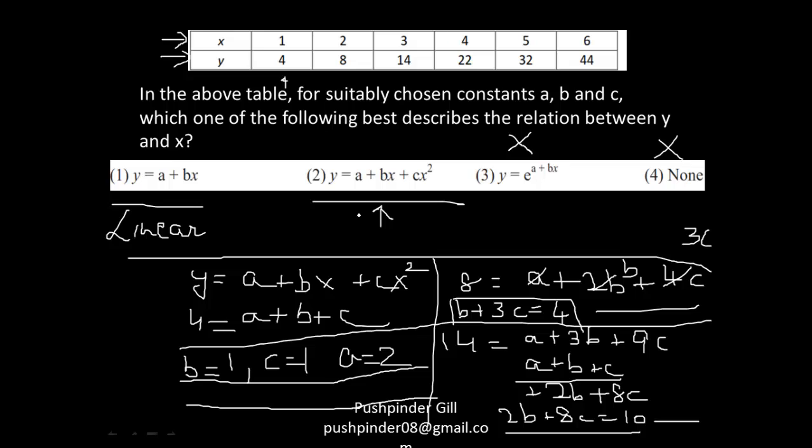Now y = a + bx + cx². Let's substitute that in here, right? So y = 44 should be equal to a, a is nothing but 2, plus bx, 1 times x, x is 6, plus cx². c is 1, x² is 36, so which is again equal to 44, right?